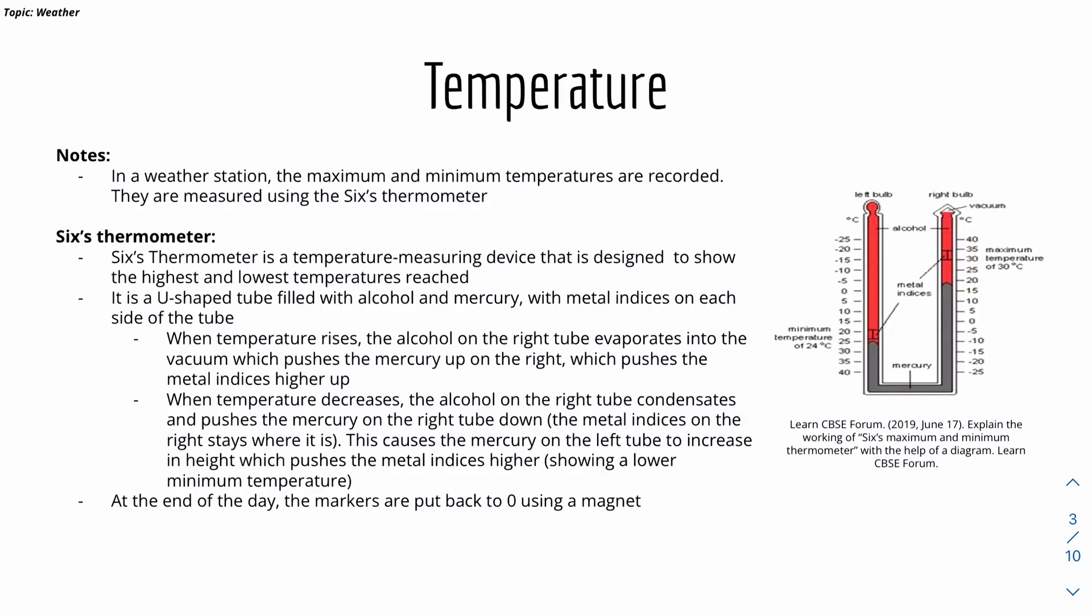The alcohol will evaporate into this tiny little vacuum, which basically pushes the indices up because the mercury gets pushed up due to the alcohol evaporating. The mercury will push this metal indices up, which means that this side here shows the maximum temperature.